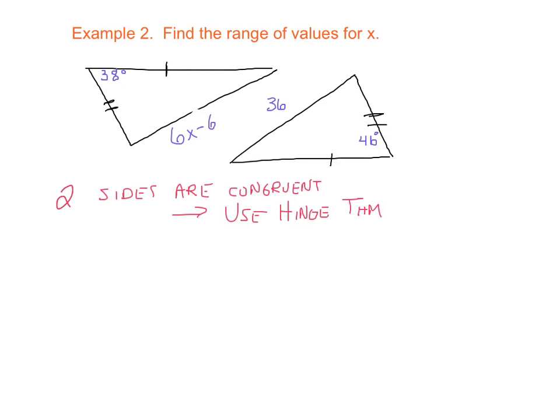Now looking at this, the hinge theorem tells us that the included angle, here's our included angle of 38 and of 46. The included angle, the bigger one, which is 46, will have a bigger third side, meaning our 36 will be larger than 6x minus 6. So let's go ahead and say that we can say that 36 is greater than 6x minus 6. And now we solve for X, we add 6. 42 is greater than 6x. And divide by 6 to see that 7 is greater than x. Again, I like to say x on the left-hand side. So I'll change this to say that x, if 7 is greater than x, then x must be less than 7.